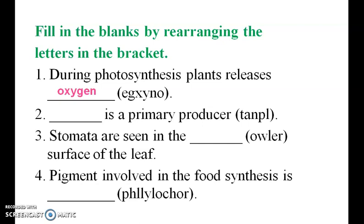Second one: plant is a primary producer. Third one: stomata are seen in the lower surface of the leaf. Fourth one: the pigment involved in food synthesis is chlorophyll.